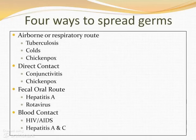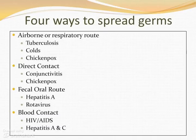There are four ways to spread these germs. The first is the airborne or respiratory route. These germs are spread when infected droplets from the nose, lungs, sinuses, or throat, or from contaminated tissues or fabric, are inhaled when we breathe. Examples of things transmitted this way are tuberculosis, colds, and chicken pox.